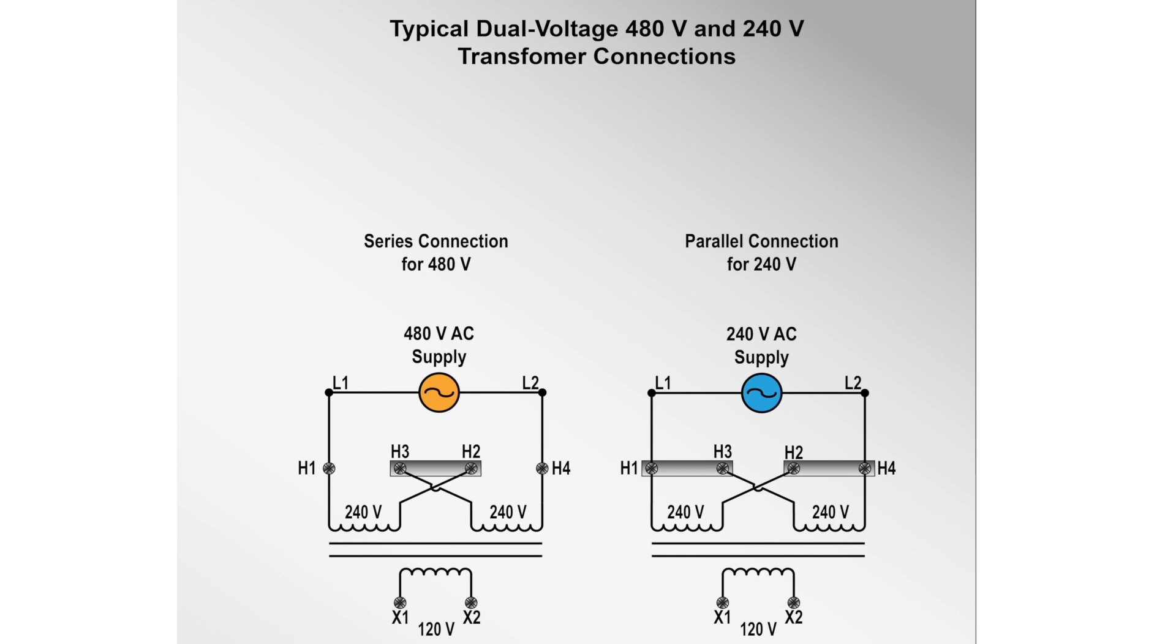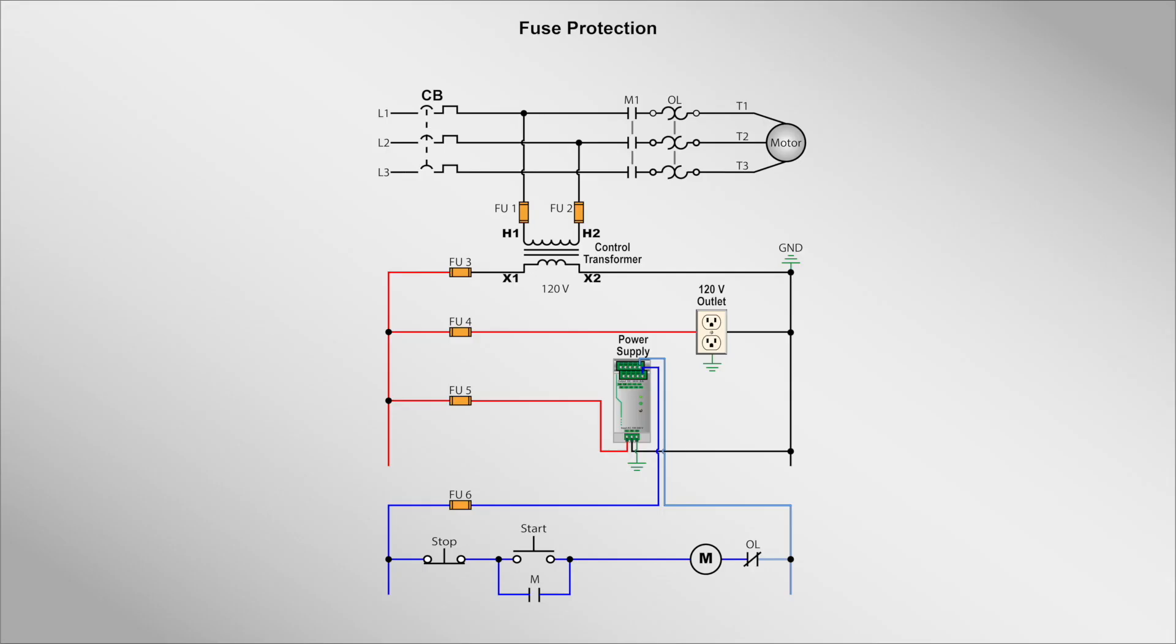In one of our earlier videos, we covered how to properly ground a transformer's secondary. The ground must be connected to X2 to ensure that an accidental ground in the control circuit will not start the motor or make the stop button inoperative. An additional requirement is that the transformer must be protected by fuses or circuit breakers.